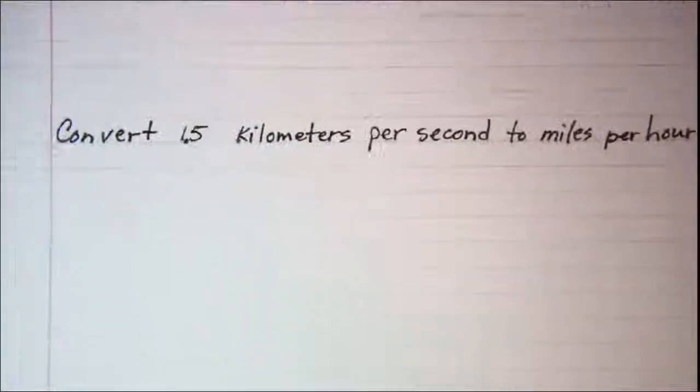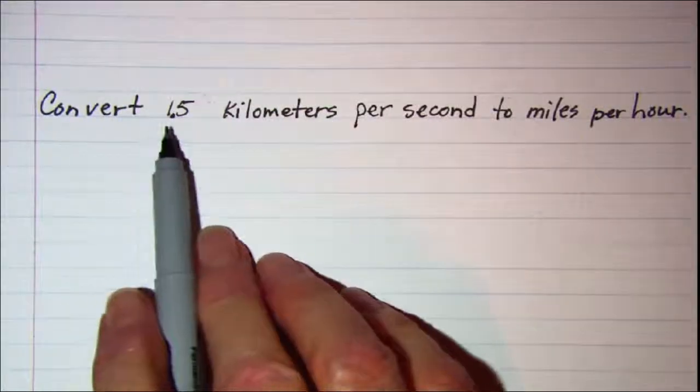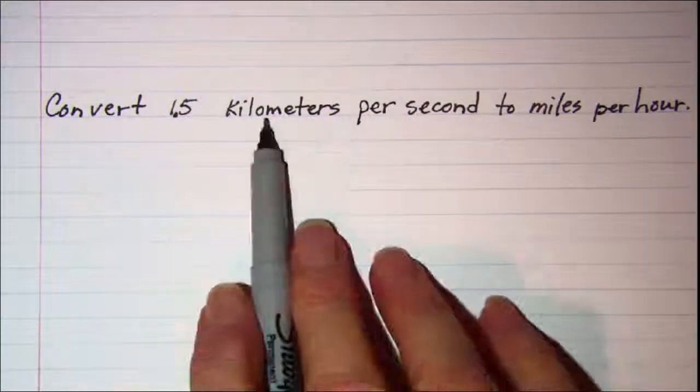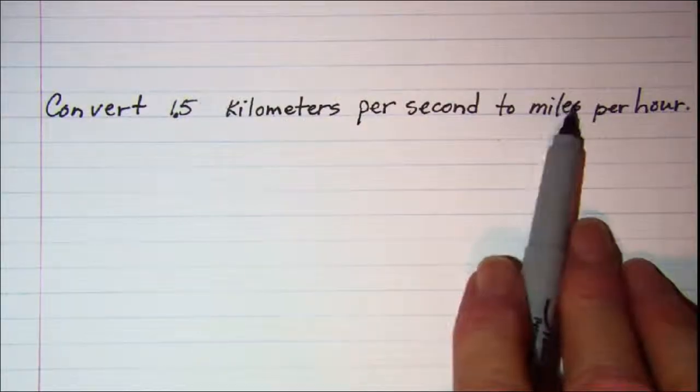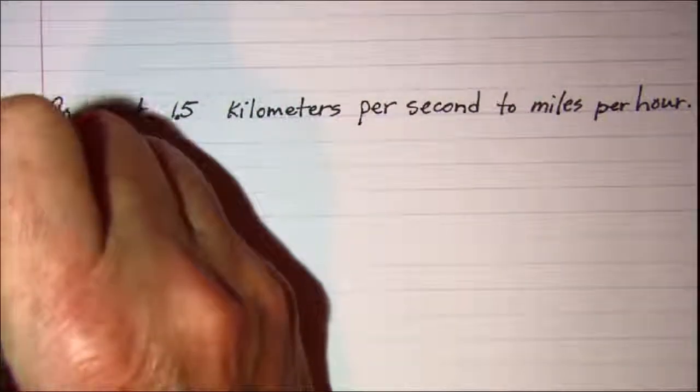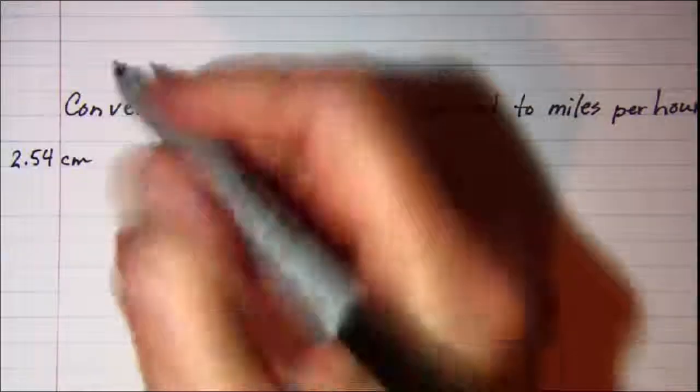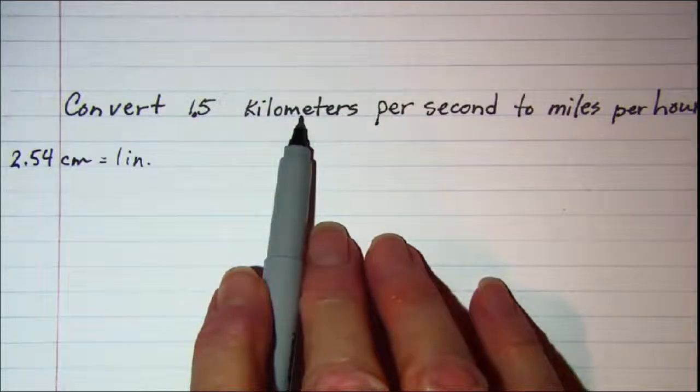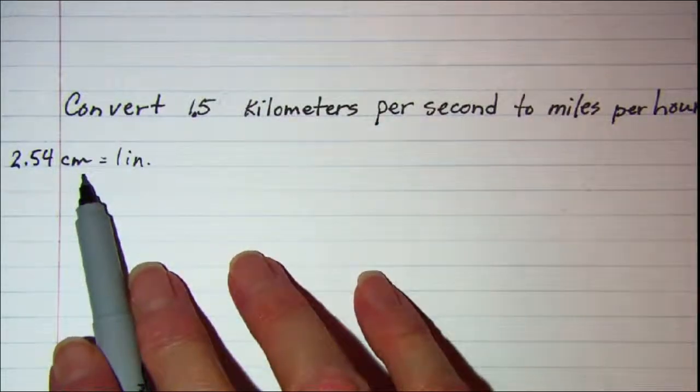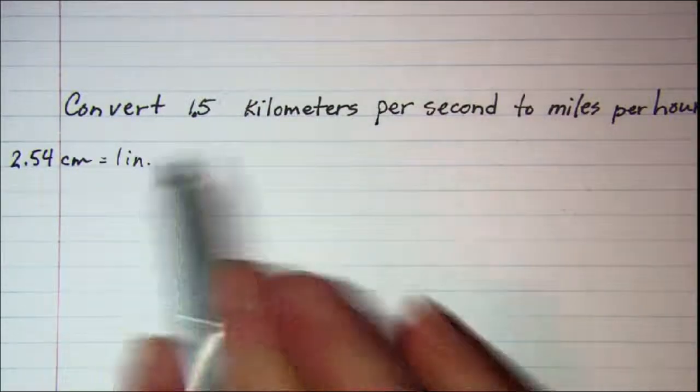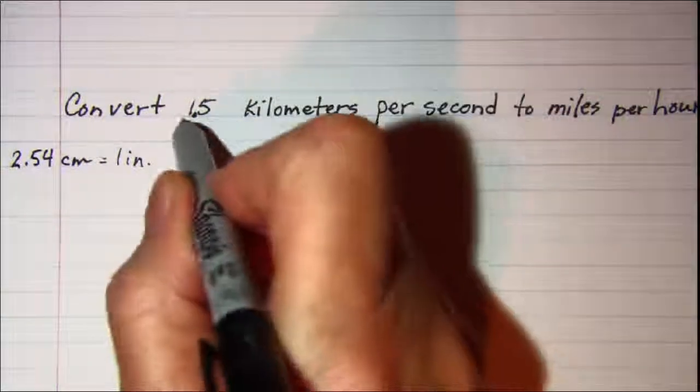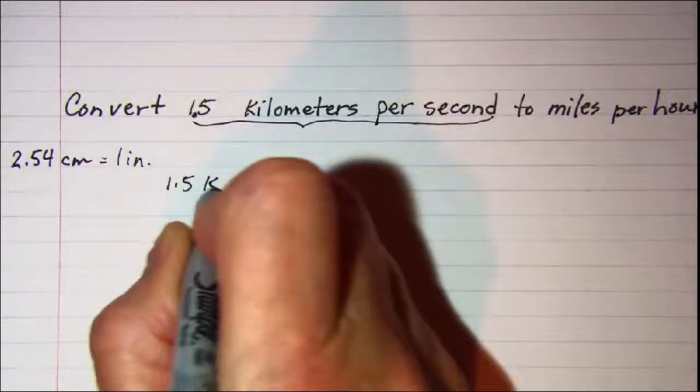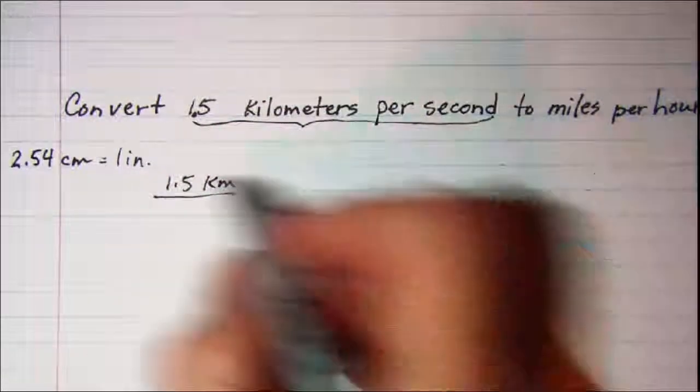Let's do another one. This one we are asked to convert 1.5 kilometers per second to miles per hour. So we are going from metric to English and so I am going to need the 2.54 centimeters equals 1 inch so I am going to take kilometers down to centimeters and then I can make the jump over to the English. So I start with my rate here 1.5 kilometers per second.